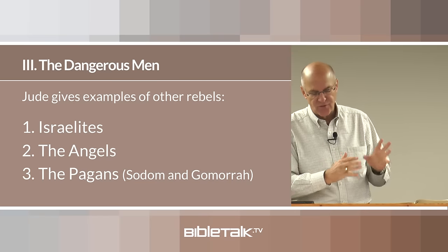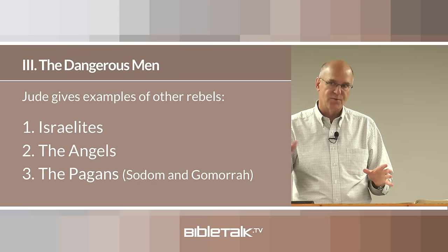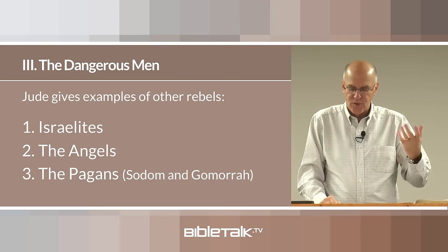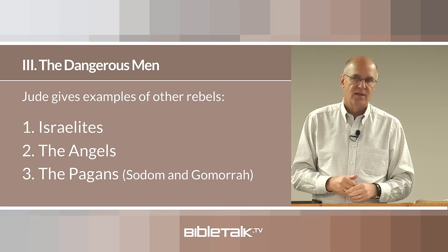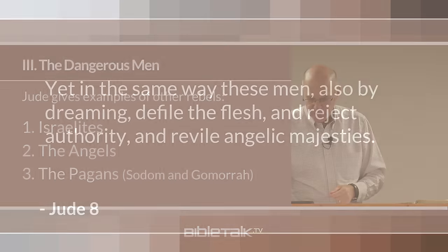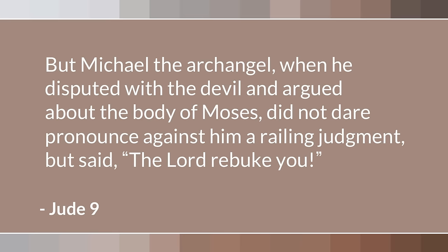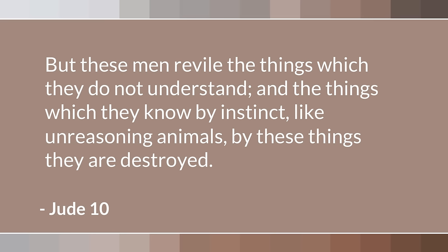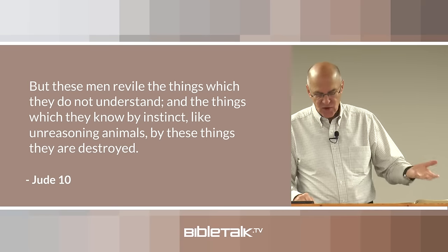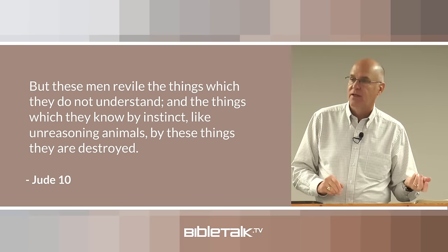Now Jude turns his attention to the false teachers themselves — not just their eventual judgment, but those people themselves. He describes the manner in which they operate and the sins they commit in their quest to capture unsuspecting souls. Verses 8, 9, and 10: 'Yet in the same way these men also by dreaming defile the flesh and reject authority and revile angelic majesties. But Michael the archangel, when he disputed with the devil and argued about the body of Moses, did not dare pronounce against him a railing judgment, but said, The Lord rebuke you. But these men revile the things which they do not understand, and the things which they know by instinct, like unreasoning animals. By these things they are destroyed.' The things these false teachers teach have no basis of authority like apostolic teaching and divine interpretation.